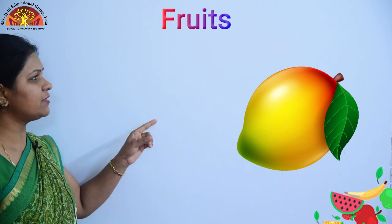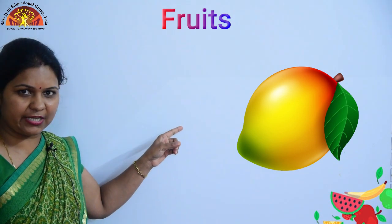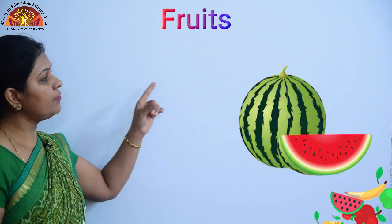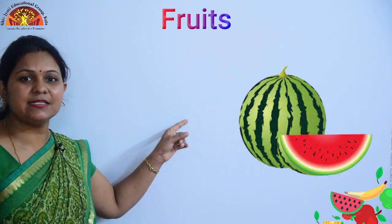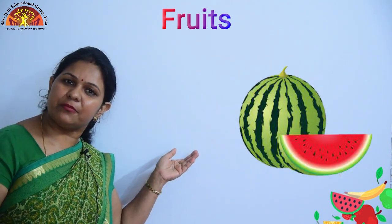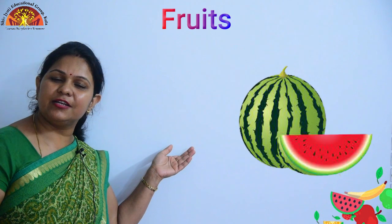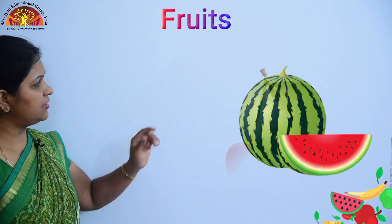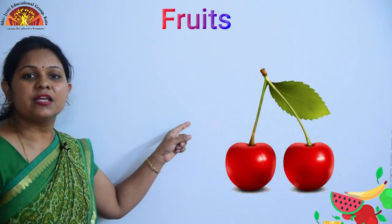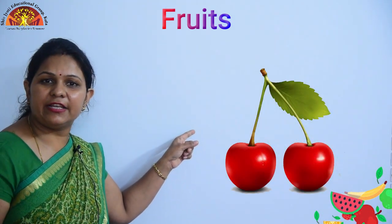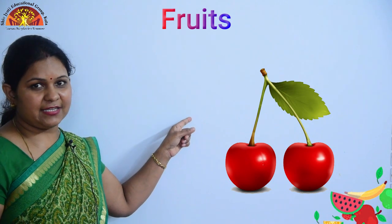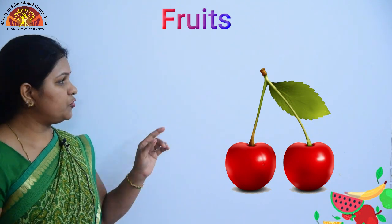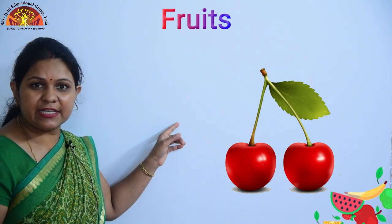Now, the next fruit is watermelon. This is watermelon. Okay? See kids, this is cherry. This is cherry. Okay? Do you like cherries?